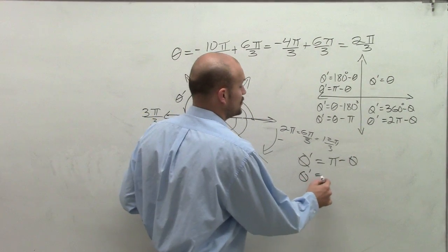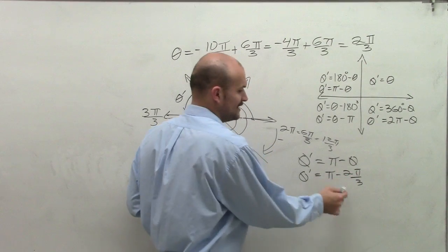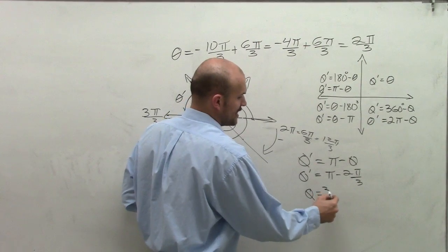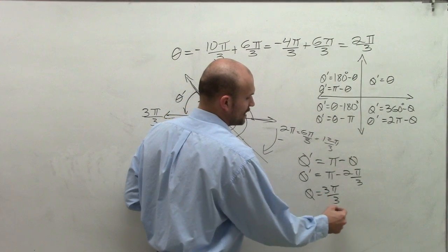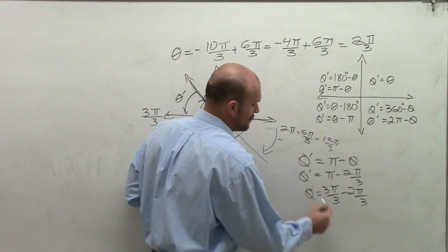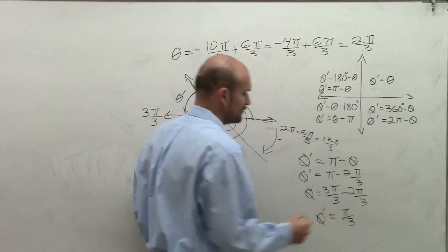However, if we go ahead and use pi minus 2 pi over 3, we need to now rewrite this with a denominator of 3. So I have 3 pi over 3 minus 2 pi over 3. And I finalize, get my answer, theta prime equals pi over 3.